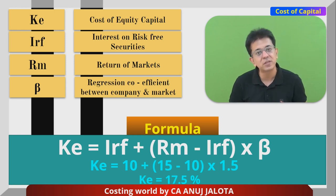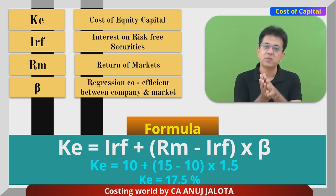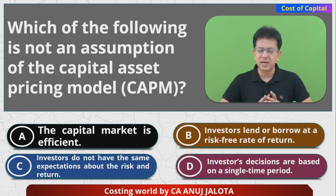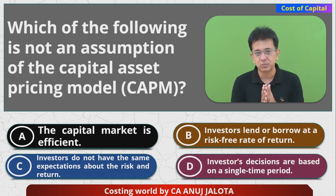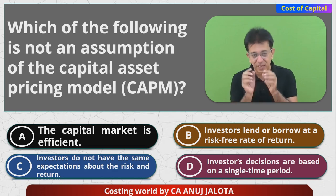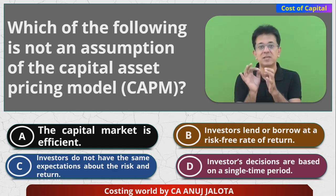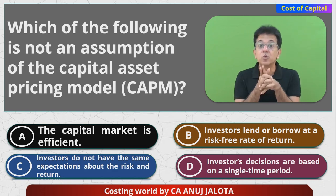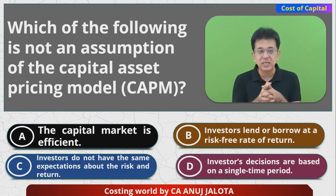So the full formula becomes: Ke = 10 + (15 − 10) × 1.5 = 10 + 7.5 = 17.5%. This 17.5% is the cost of equity for the company — it's the return TCS shareholders expect and that the company must provide. Now, every theory is valid under certain assumptions, and one key CAPM assumption is that all investors have the same expectations about risk and returns, so every investor's Ke will come out the same.